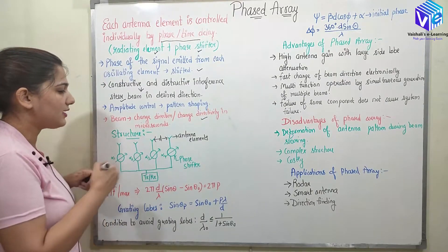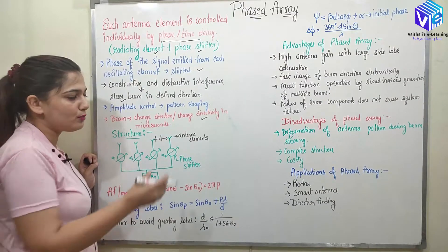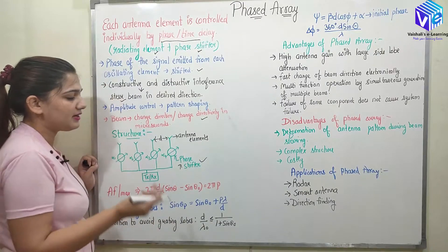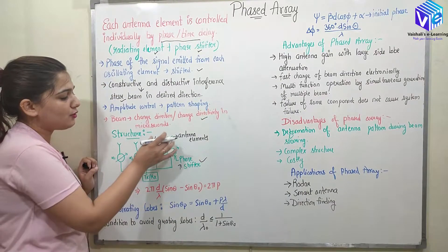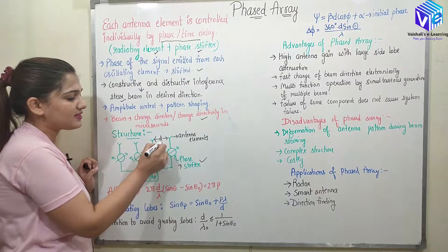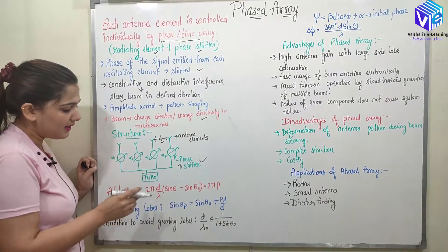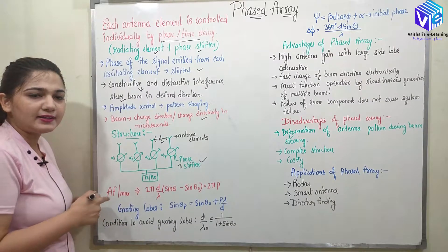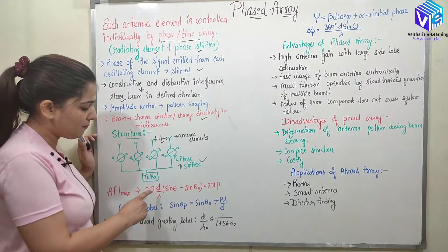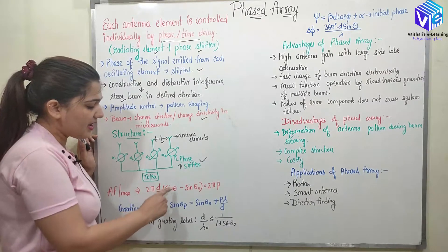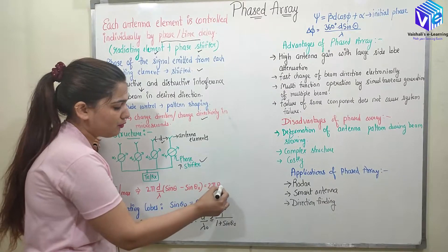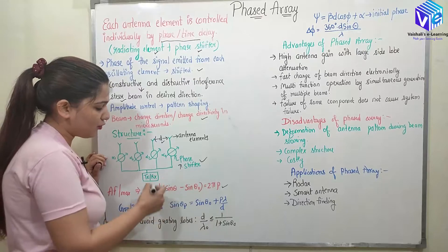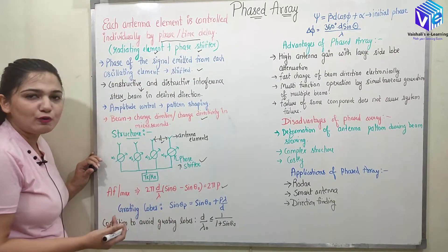This is how the structure looks. We have the antenna elements, and with each and every antenna element we have a phase shifter. Phase shifters are really important components. Between the two antenna elements we have the distance d. Here we have the transmitter or the receiver. The maximum array factor can be given by the formula: 2π d/λ (sin θ − sin θ₀) = 2π × p, where this term gives p.